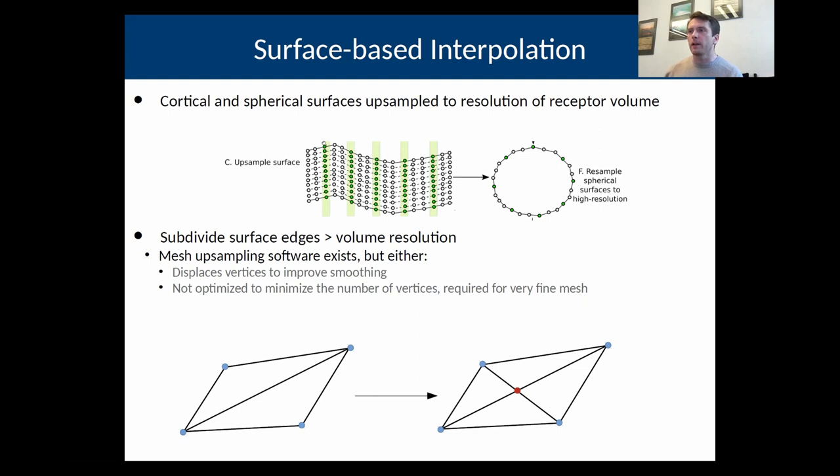So if you're trying to create a receptor volume at 400 microns, you can upsample the mesh to 400 microns. What that really means is that you have no edges that are larger than 400 microns. The reason this is important is that it guarantees that for each of these surfaces, you will have at least one vertex that is in one of the perpendicular autoradiographs.